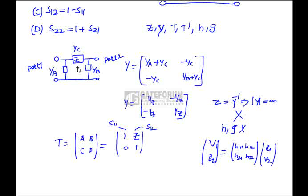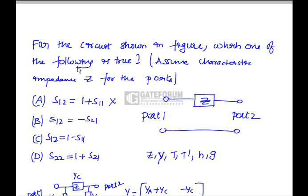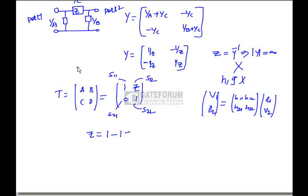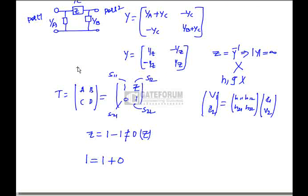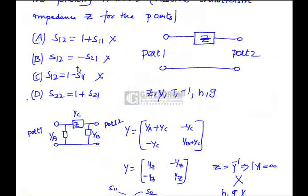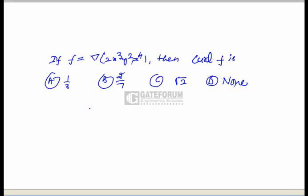Taking S11, S12, S21, S22 and observing the relations: Option A says S12 = 1 + S11 — that is wrong. Option B says S12 = -S21 — also wrong. Option C says S12 = Z equals 1 - S11 = 1, which is not equal to zero, so option C is also wrong. Option D: S22 (which is 1) equals 1 + S21 (which is 0) — this is satisfied. Option D is correct.